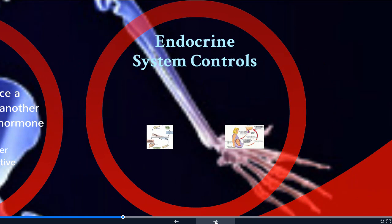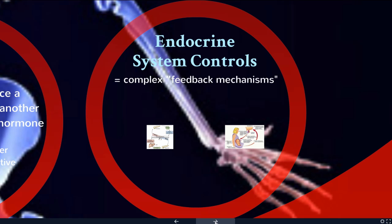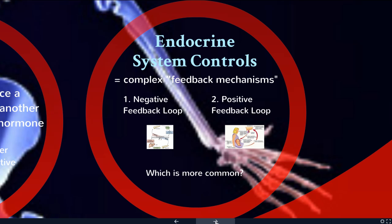The endocrine system has a whole series of feedback loops that help control which hormones are produced when and what effects they might have on the body. There are two kinds of feedback mechanisms in the human body: negative feedback loops and positive feedback loops. As I talk about these two, think about which one is more common and which is most important when we are trying to maintain homeostasis.